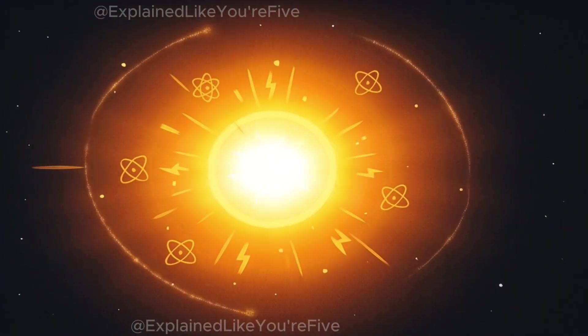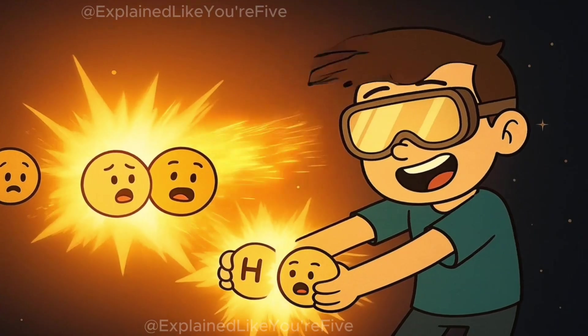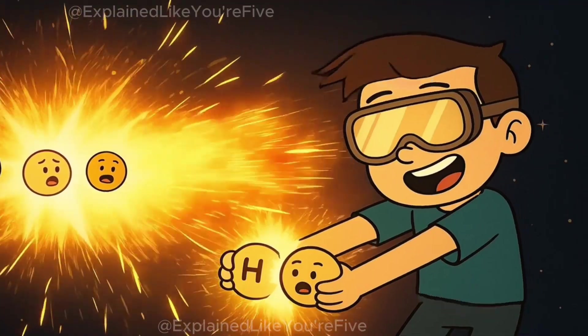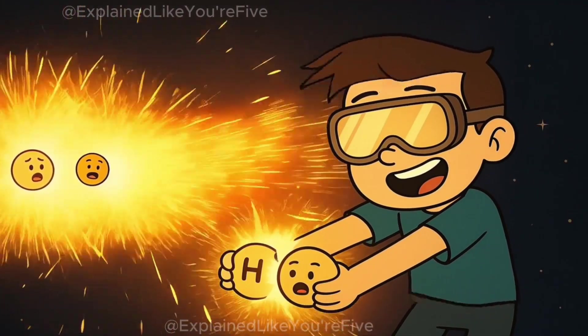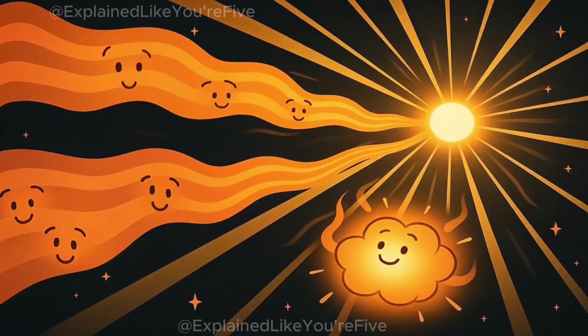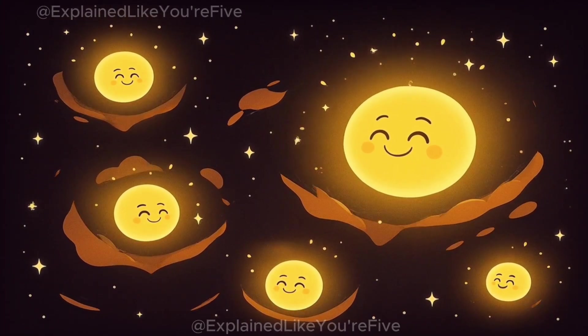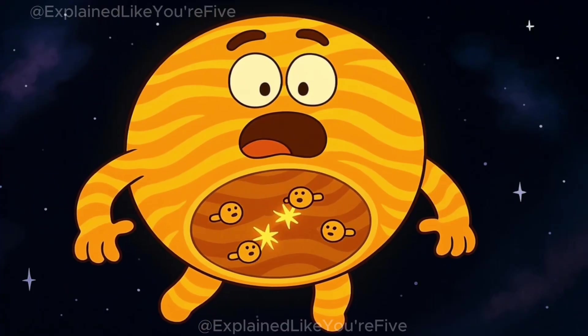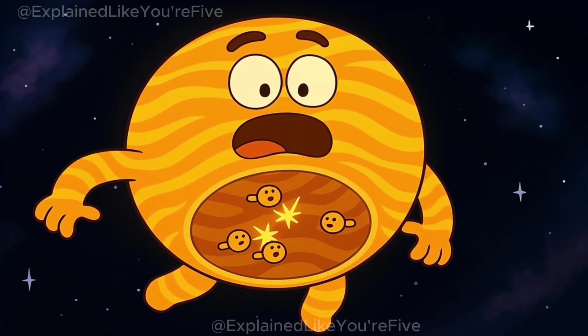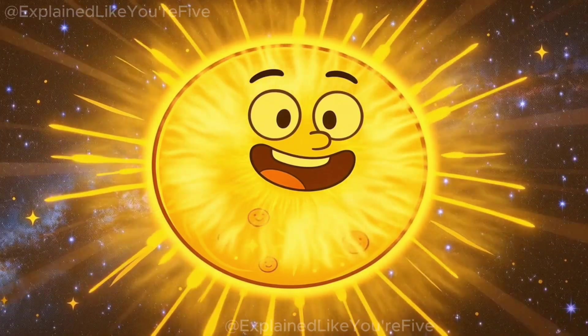The gas got so hot and dense that it started a process called nuclear fusion. Nuclear fusion is like a special kind of fire that happens when you squish hydrogen together so tightly that it turns into helium and releases enormous amounts of energy. And this energy comes out as heat and light. When nuclear fusion started happening in these dense gas clouds, the first stars were born. Stars are basically giant balls of gas that are constantly having nuclear fusion reactions inside of them. The light and heat from these fusion reactions is what makes stars shine.